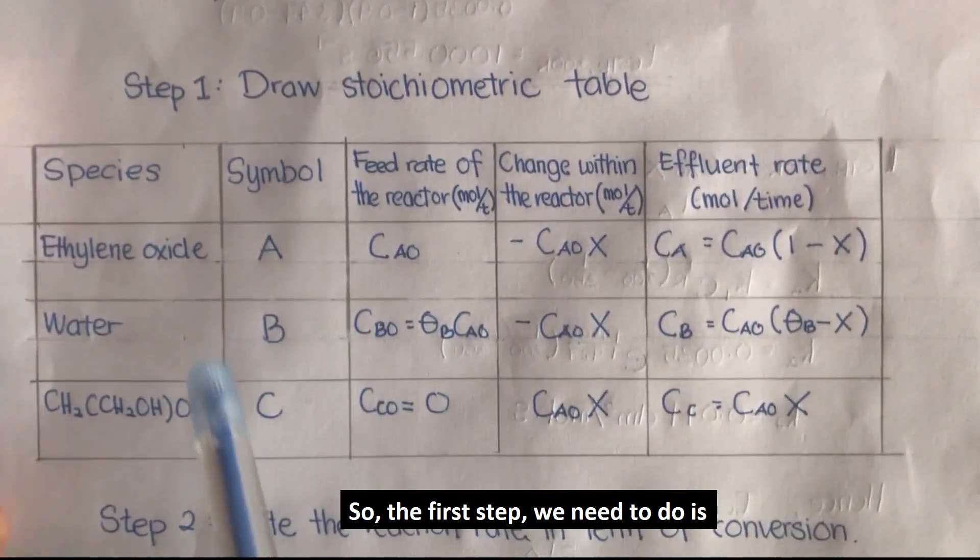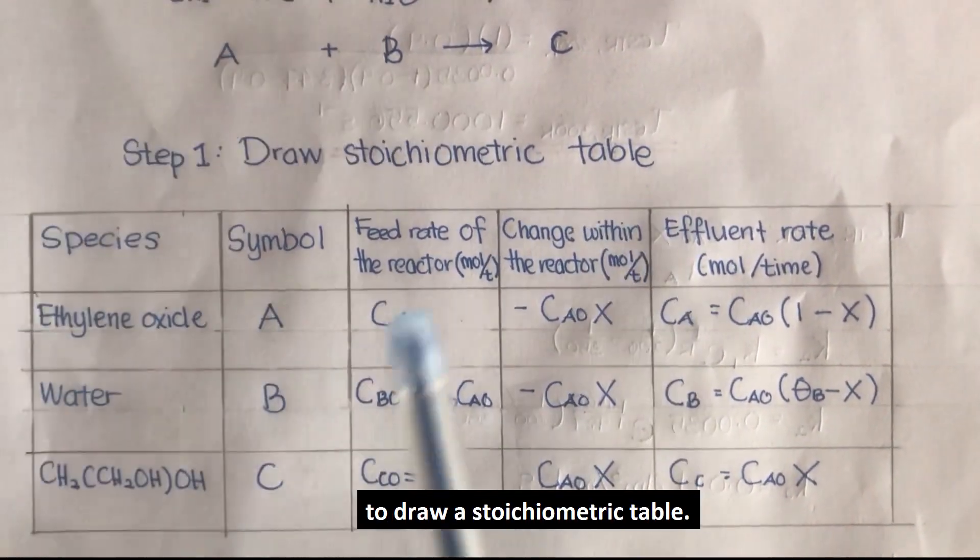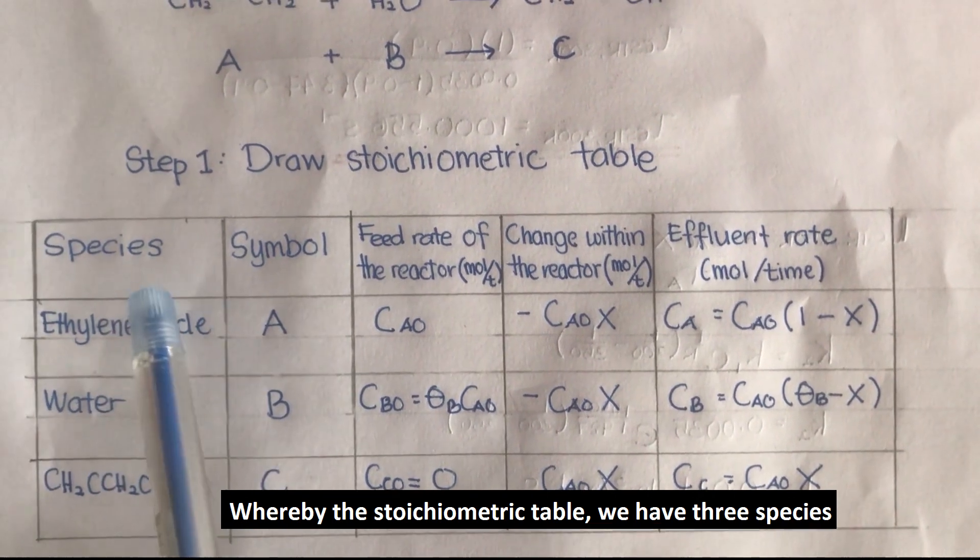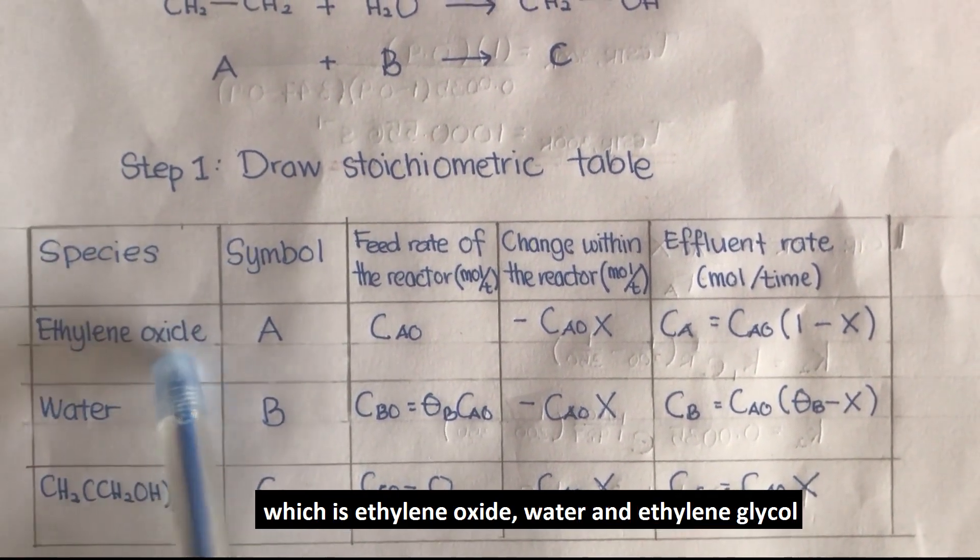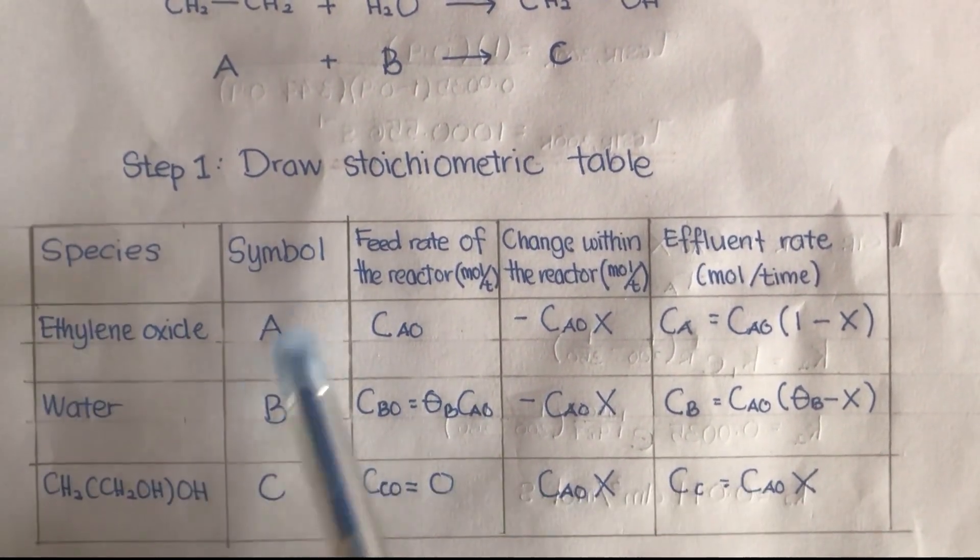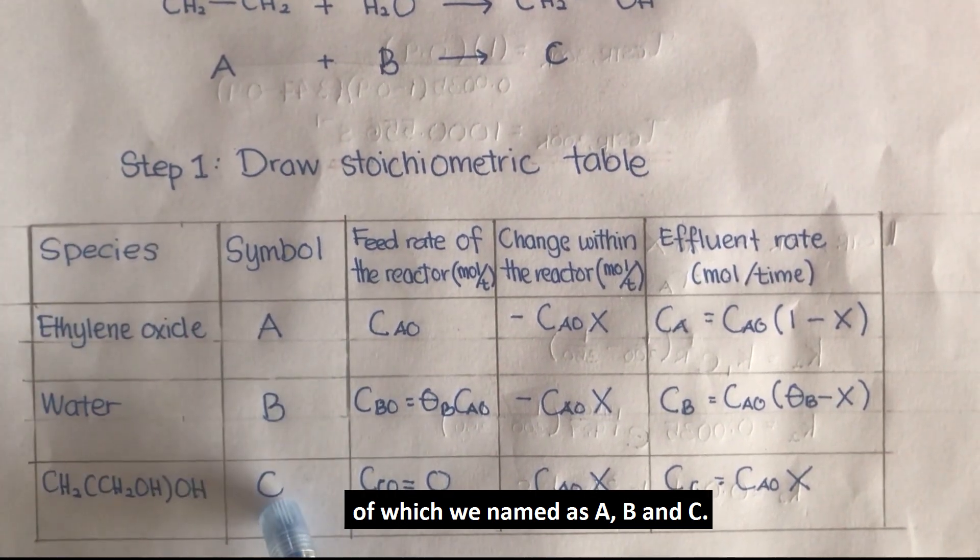The first step we need to do is to draw the stoichiometric table whereby the stoichiometric table will have three species which is ethylene oxide, water, and ethylene glycol, of which we named them as A, B, and C.